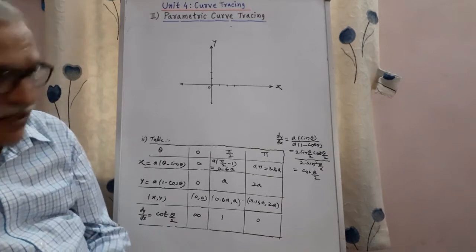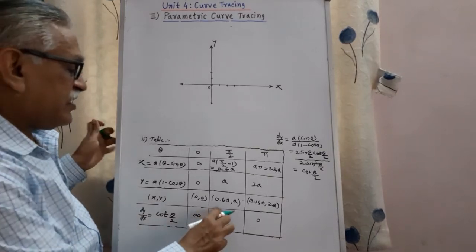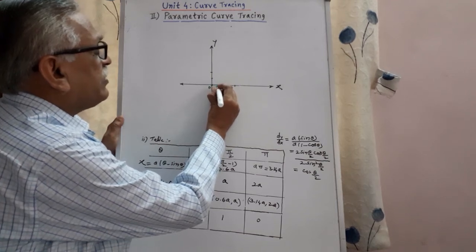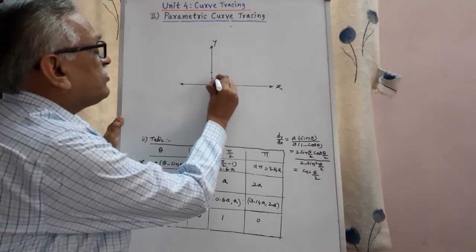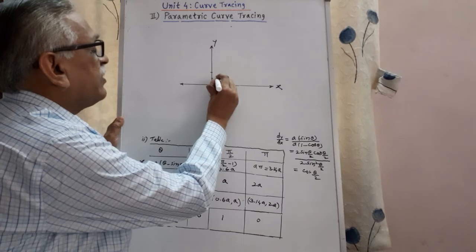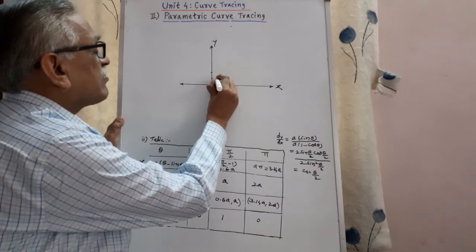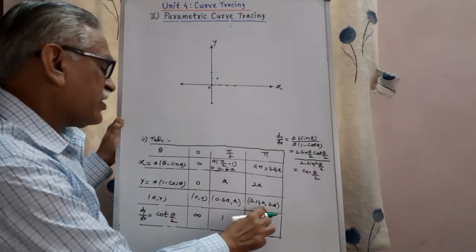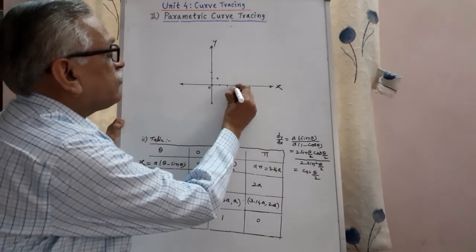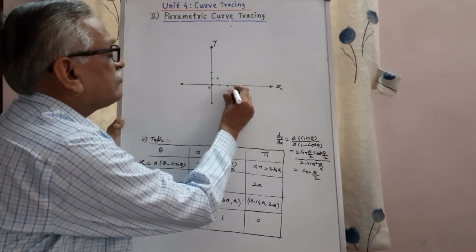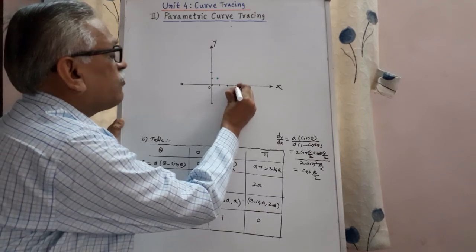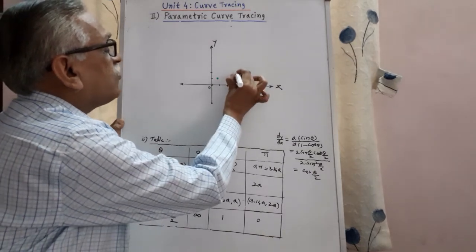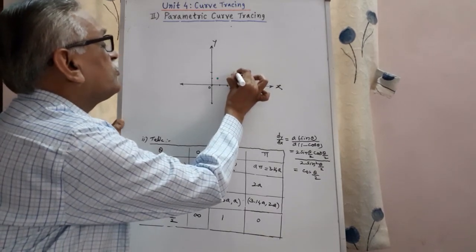Second one is 0.6a, a. 0.5, 0.6 somewhere here and the corresponding value is a. Next is 3.14a, 2a, approximately here and the corresponding value of y is 2a.